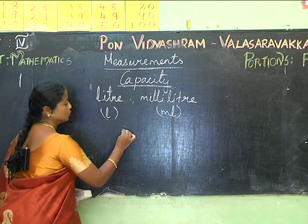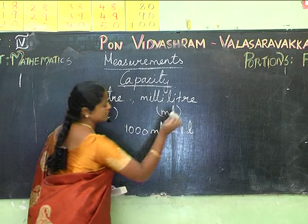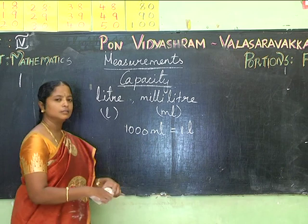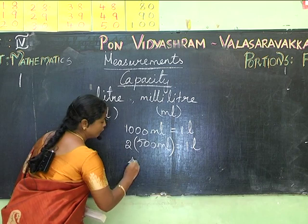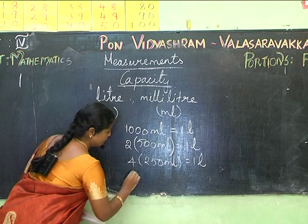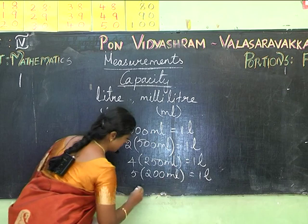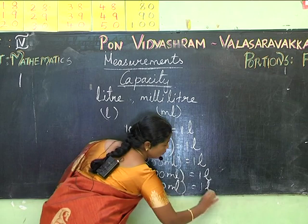1000 mL equals 1 liter. Like kilograms, we have: 2 × 500 mL equals 1 liter; 4 × 250 mL equals 1 liter; 5 × 200 mL equals 1 liter; and 10 × 100 mL equals 1 liter.